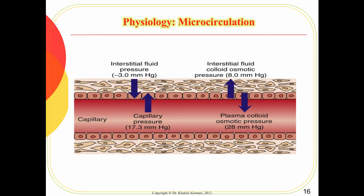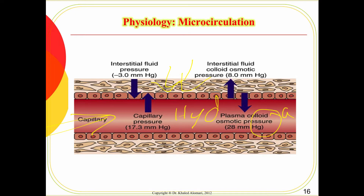There must be a balance between the intravascular pressure and the extracellular pressure. The hydrostatic pressure depends on blood volume, and the oncotic or colloid pressure depends on protein, mainly albumin. In a patient with edema, there is an imbalance in these pressures. For example, lack of albumin will affect the oncotic pressure, and fluid starts moving toward the cells — that's why you see edema.